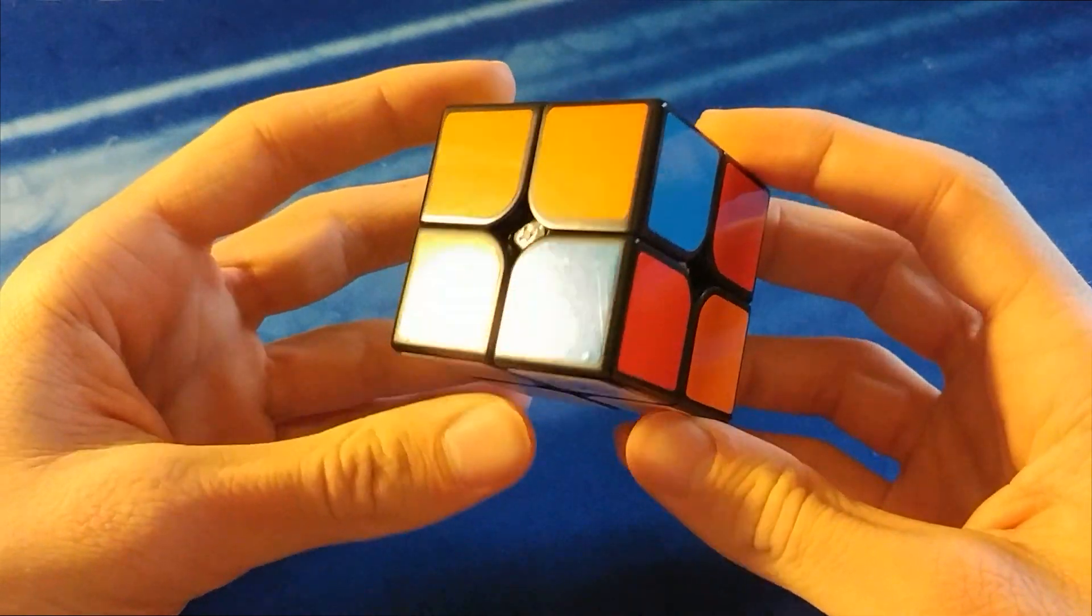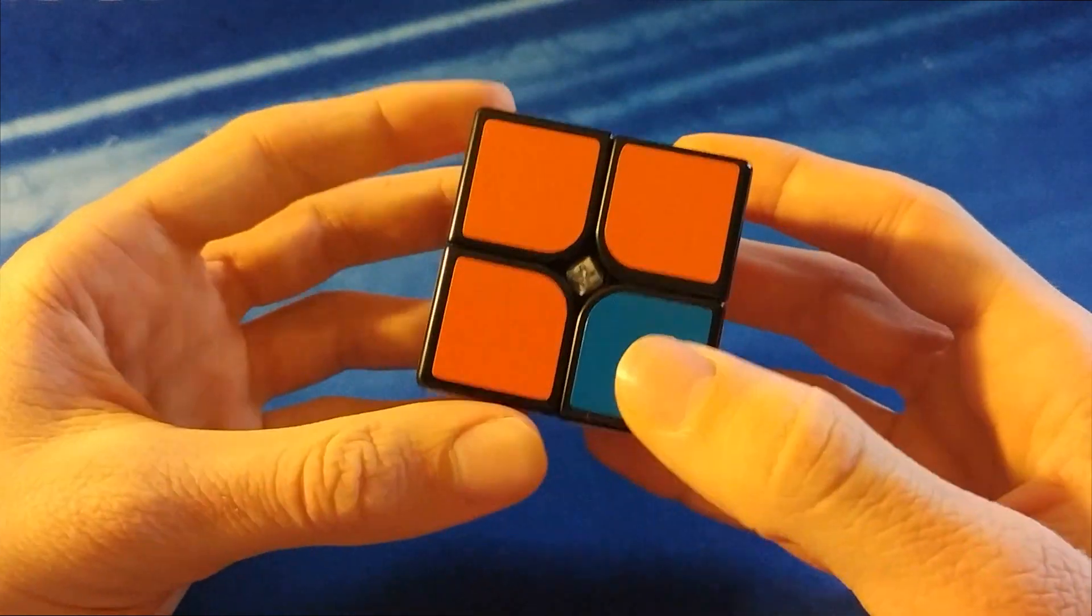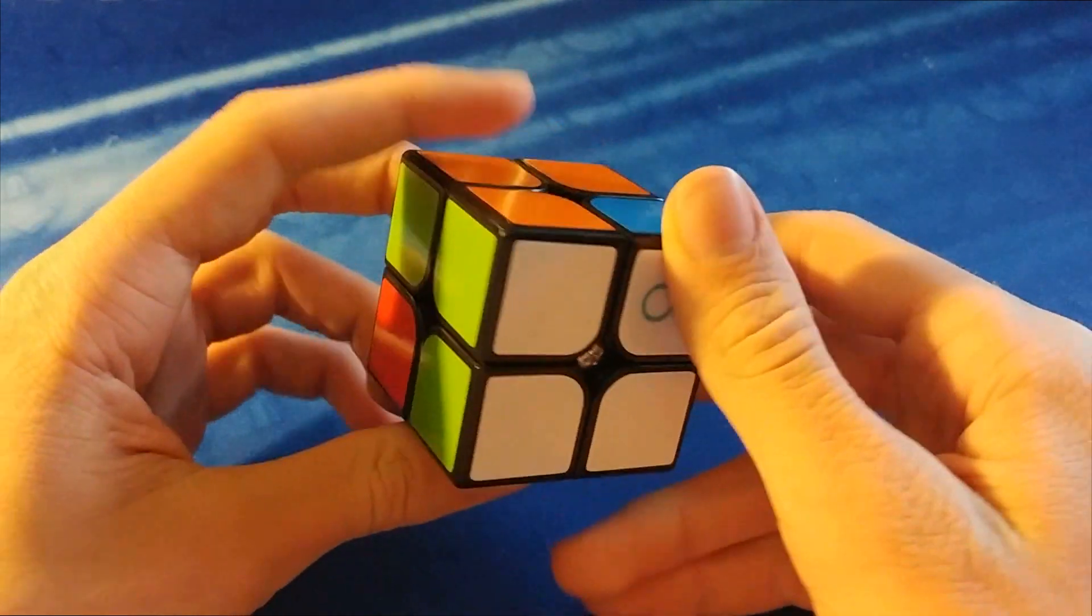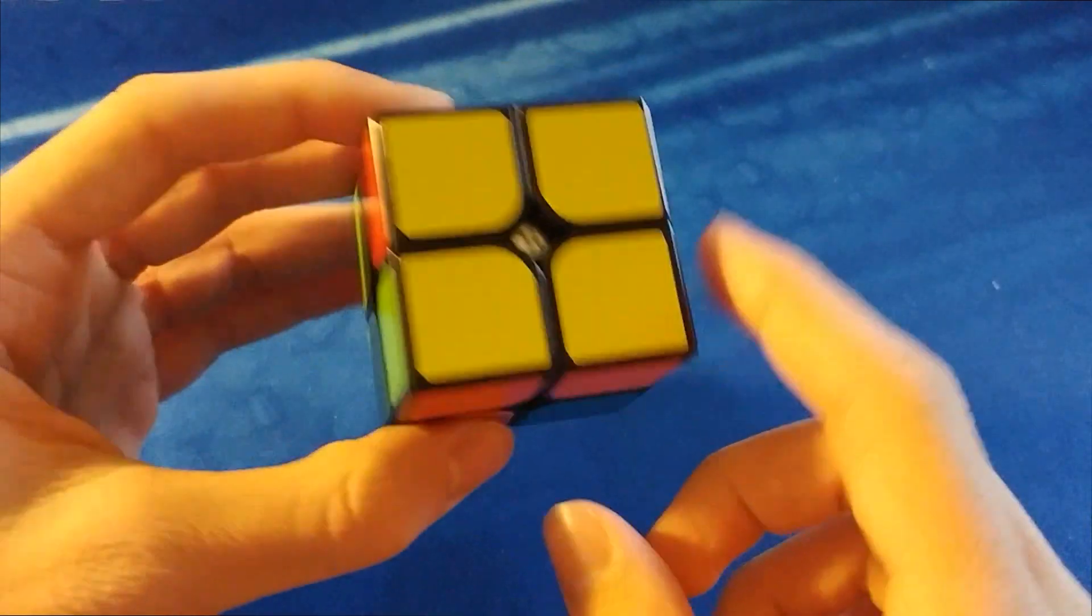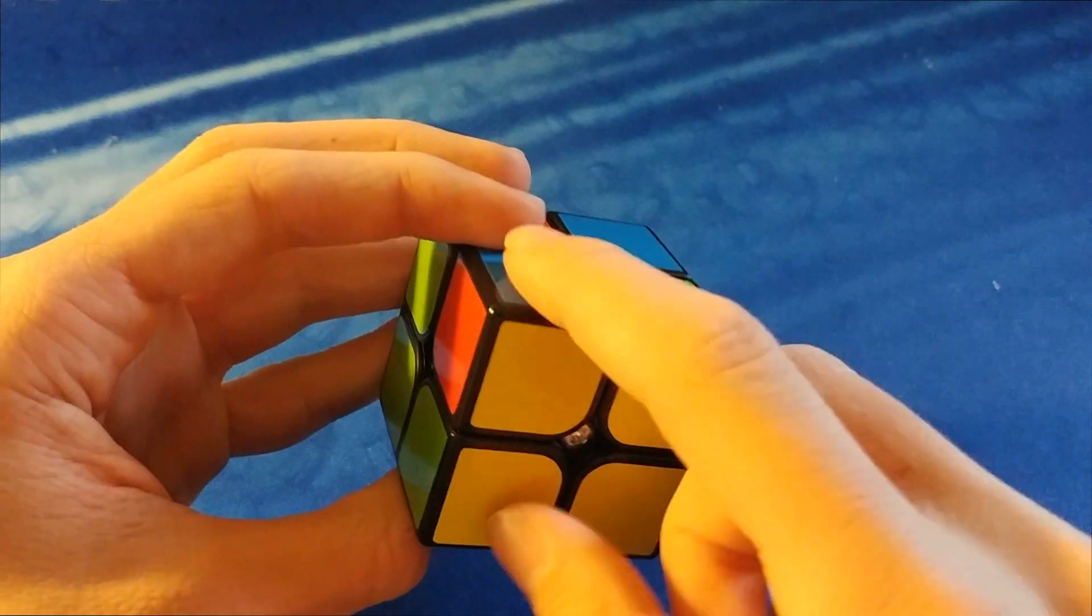And now what we're going to do is we're going to do something known as PBL. Permute both layers, because we have this layer left to solve, these two pieces, and this layer left to solve, which is these two pieces.